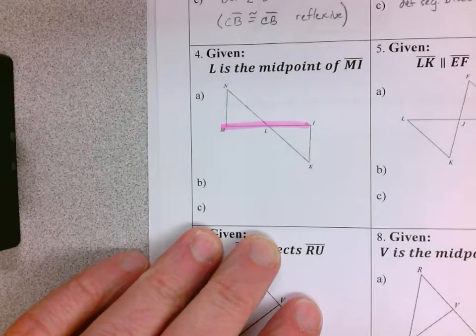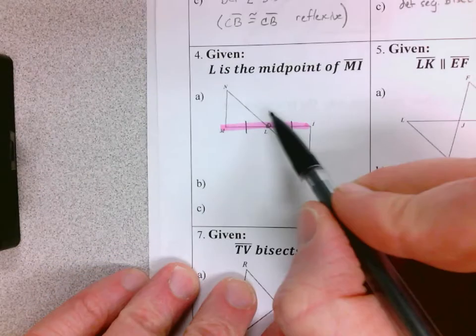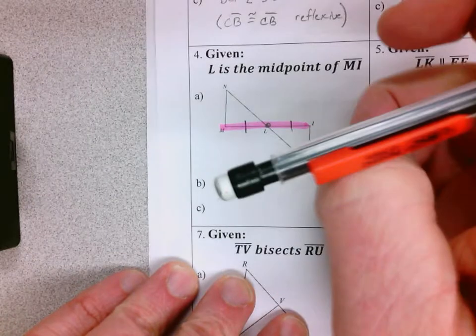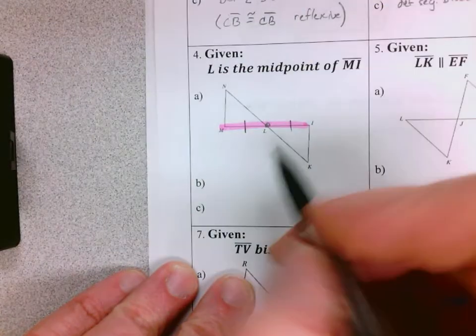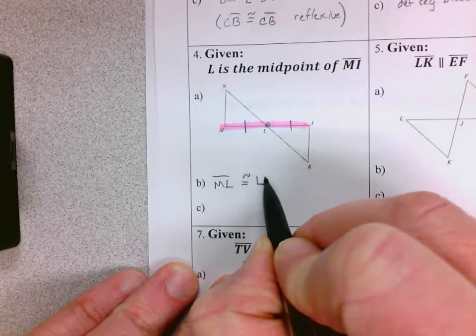So there's MI, I want to make sure I mark the right tick marks, and there's my midpoint. So that's what's congruent. Don't assume that these are congruent because L—it doesn't say L is the midpoint of the other segment.